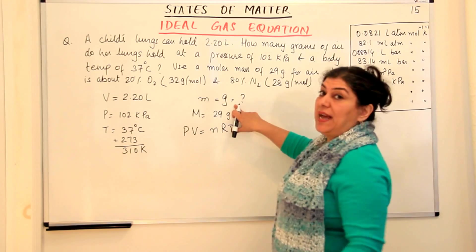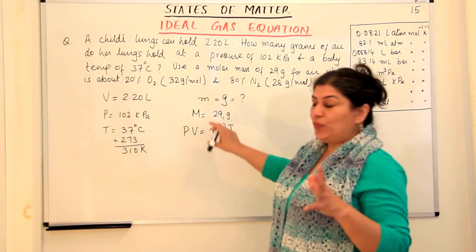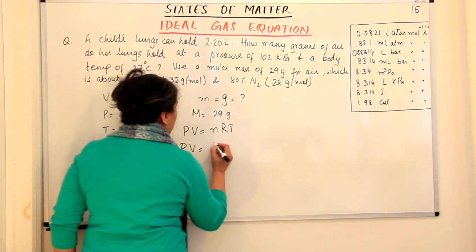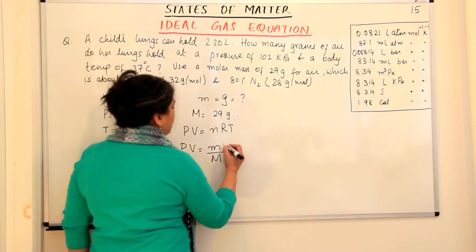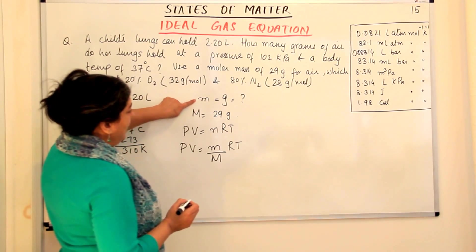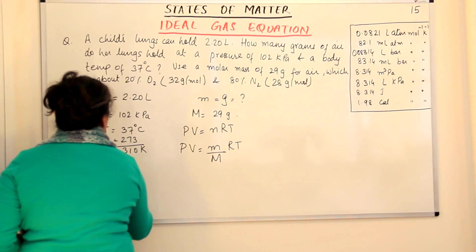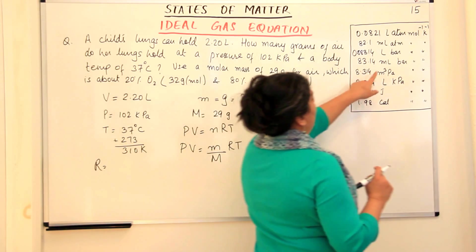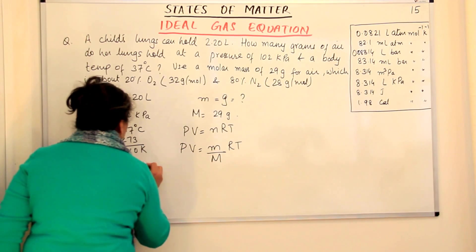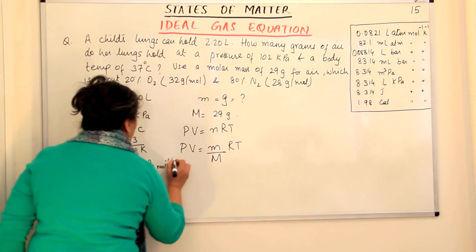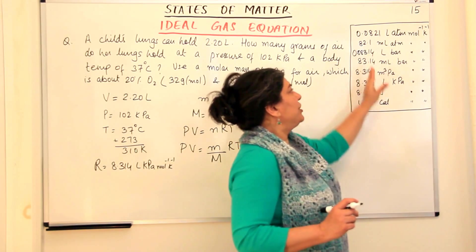We know number of moles n = mass / molar mass. So we can modify the equation to PV = (m / M) × RT, where m is the mass and M is the molar mass. Since the volume is in litres and pressure is in kilopascals, the value of R will again be 8.314 litre·kPa·mol⁻¹·K⁻¹. Per mole per kelvin is common for all these forms of R; it is the units of pressure and volume which differ.